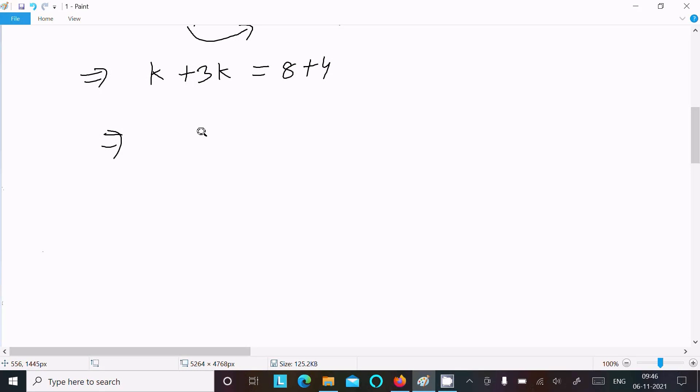Now k plus 3k equals 4k, and 8 plus 4 equals 12. Therefore k equals 12 divided by 4, which cancels to 3. So k equals 3 is our answer.